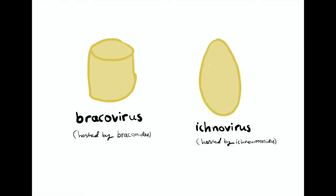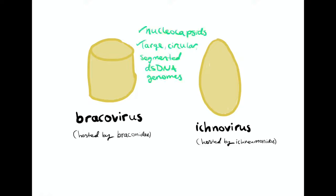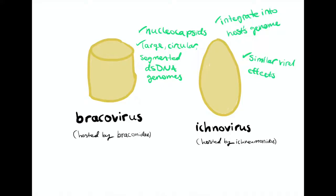Bracoviruses are cylindrical, while Ichnoviruses are ellipsoid. This differing morphology is because the two genera of polydnaviruses evolved from different ancestors. However, they both have nucleocapsids and large, circular, segmented, double-strand DNA genomes. They also share similar characteristics, such as integrating into the host's genome, and they both cause similar viral effects. All of this is likely due to convergent evolution.